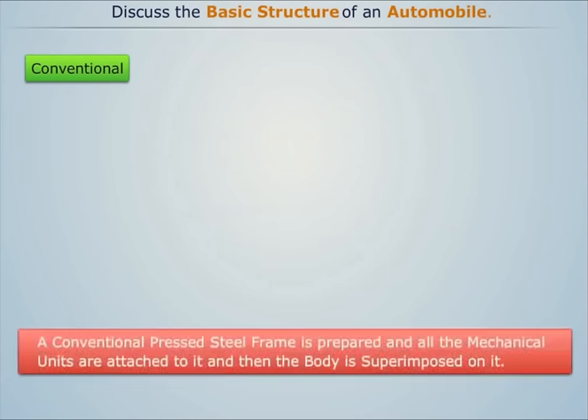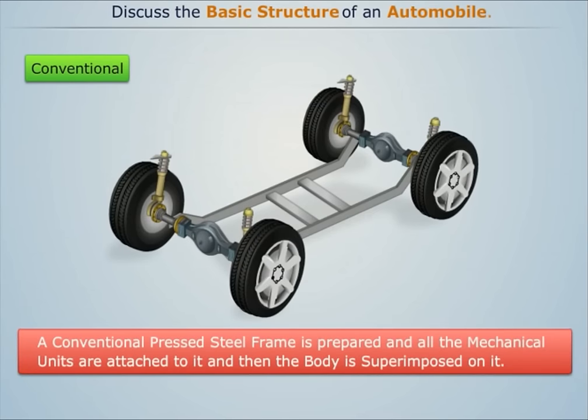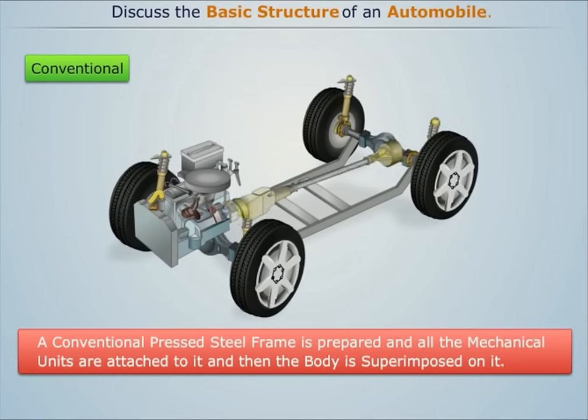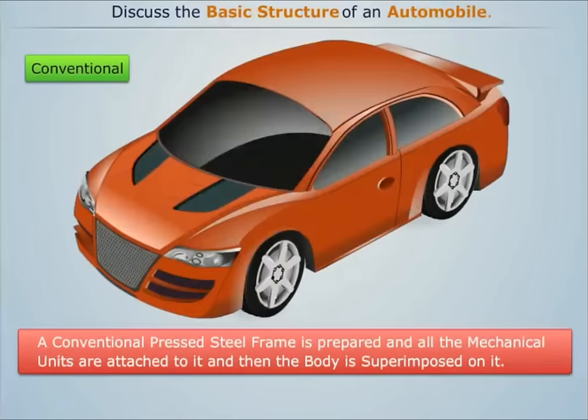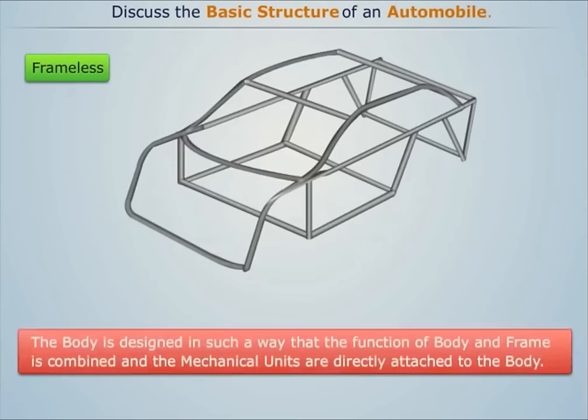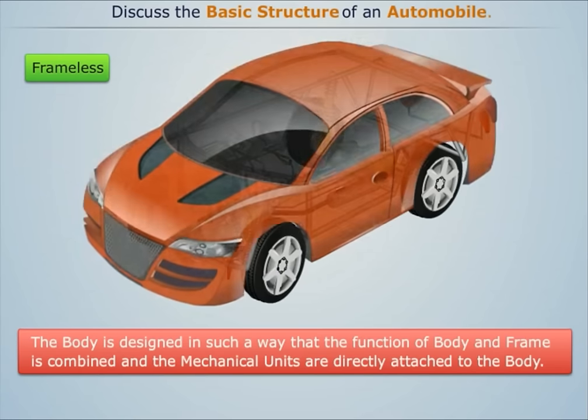In conventional construction, a pressed steel frame is prepared, all mechanical units are attached to it, and then the body is superimposed on it. In frameless construction, the body is designed so that the functions of body and frame are combined, and all mechanical units are directly attached to the body.